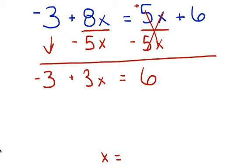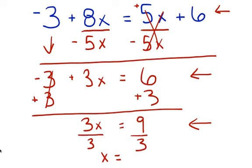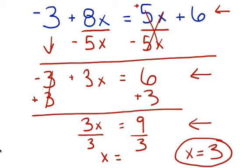Now we have a two-step equation, and we're going to solve it exactly like we've been doing. We're going to add 3 on both sides — those cancel to 0, and we're left with 3x equals 6 plus 3 is 9. So we went from variables on both sides, to two-step, to a one-step equation. We divide by 3 and end up with x equals 3. Remember to check it by plugging this value back into your original equation.